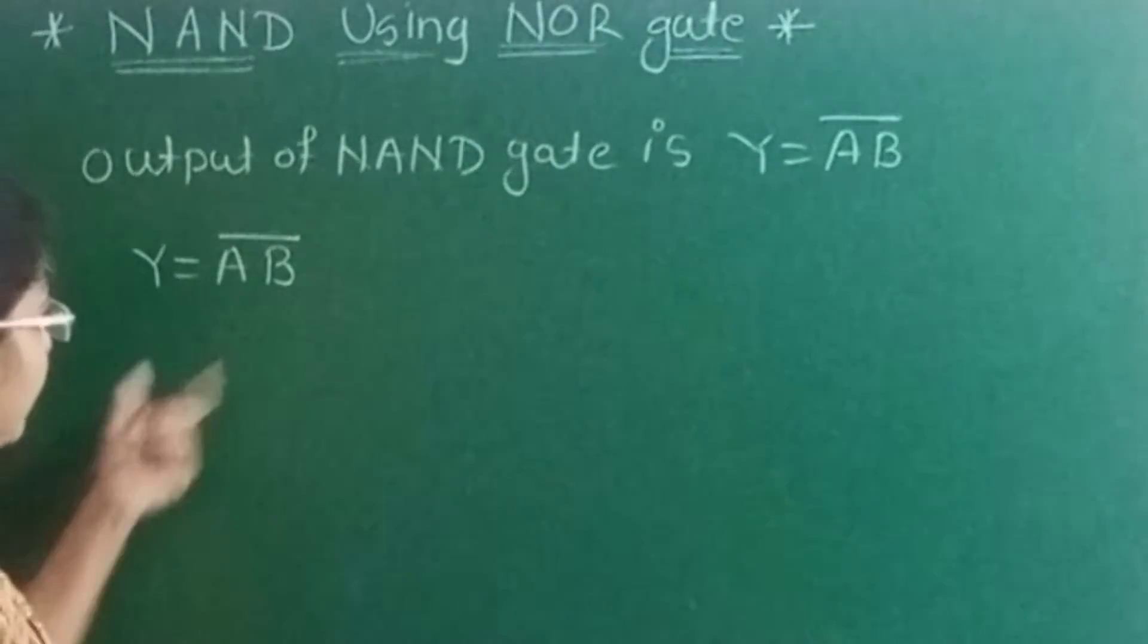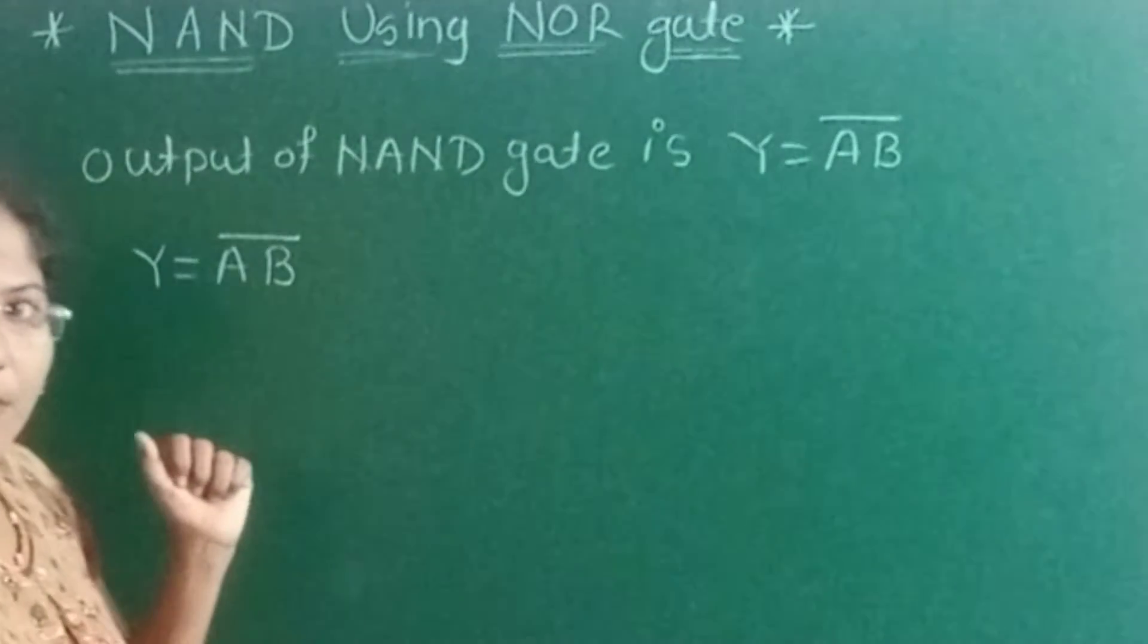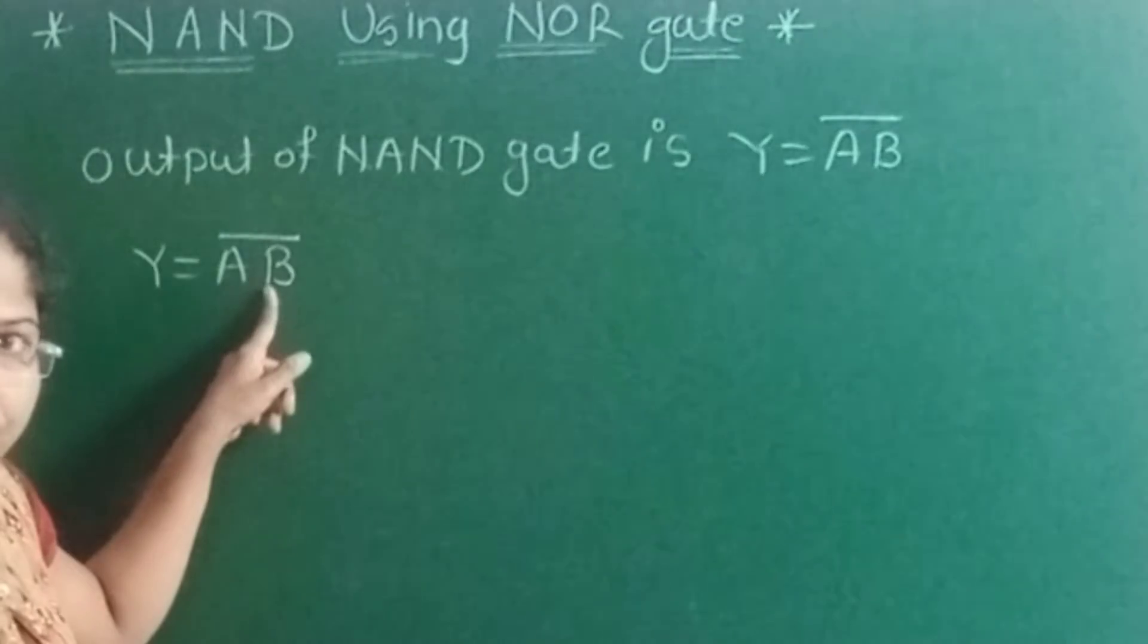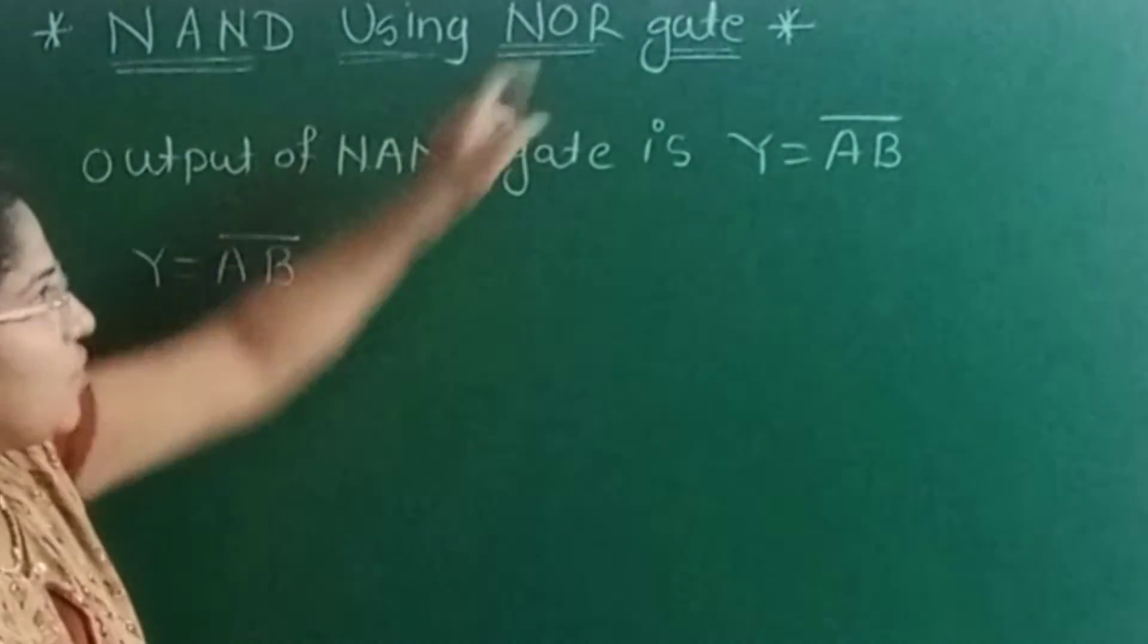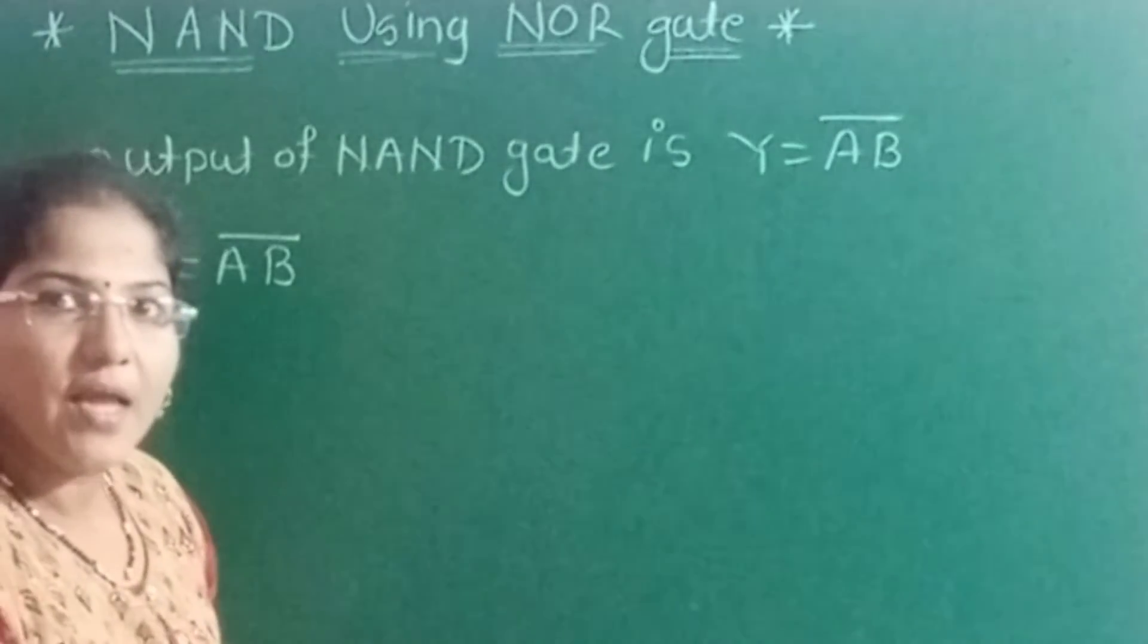Now you can see AB is the product term. When we use the NOR gate, its output is nothing but the addition term. So we have to convert this product term into the addition term so that we can use the NOR gate.